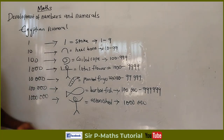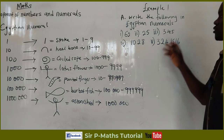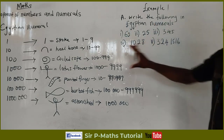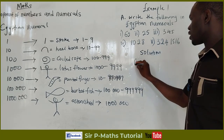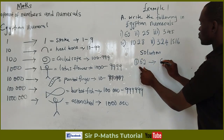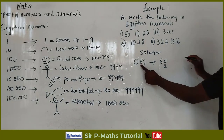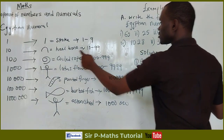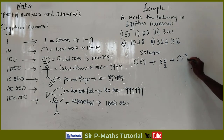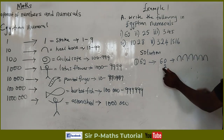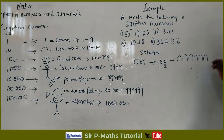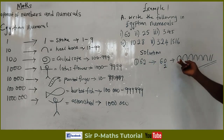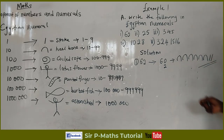Let's consider some examples representing numbers using Egyptian numerals. The first is 62. If I split 62, I get 60 and 2. For 60, I'll use the heel bone six times to represent 60 — one, two, three, four, five, six. For 2, I'll use a stroke because 2 is a unit falling between 1 and 9 — one, two. So this represents 62. An Egyptian would draw six heel bones and two strokes for 62.